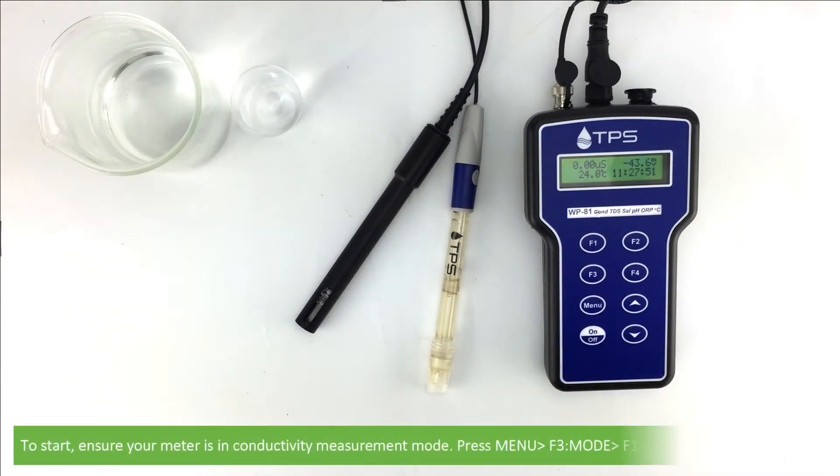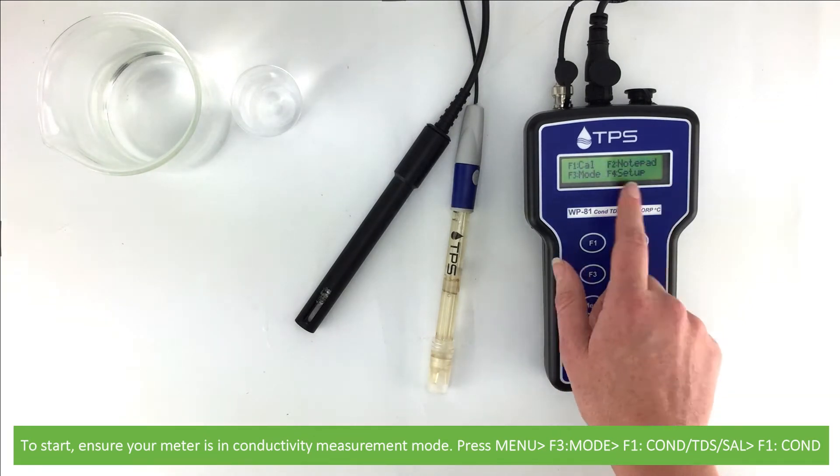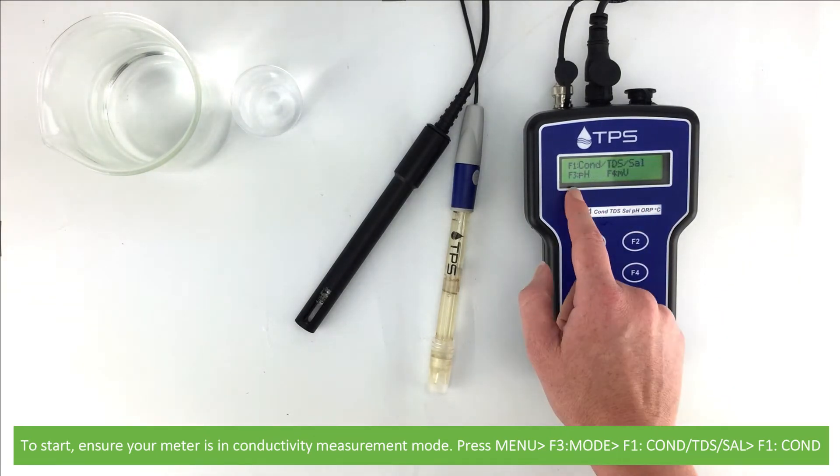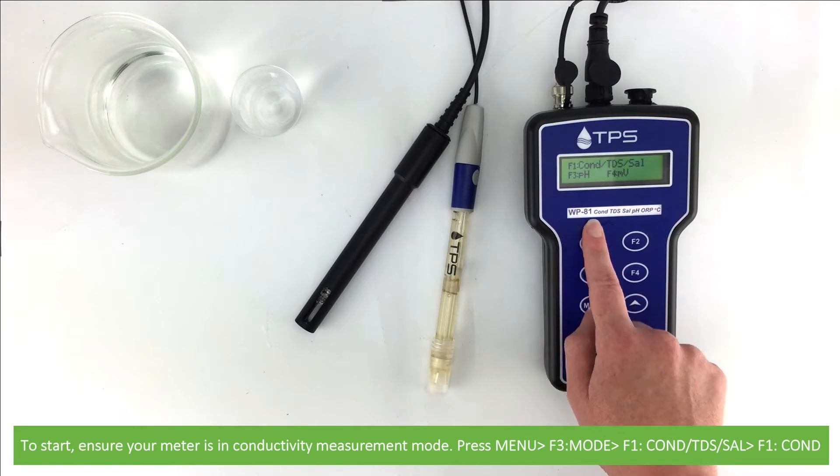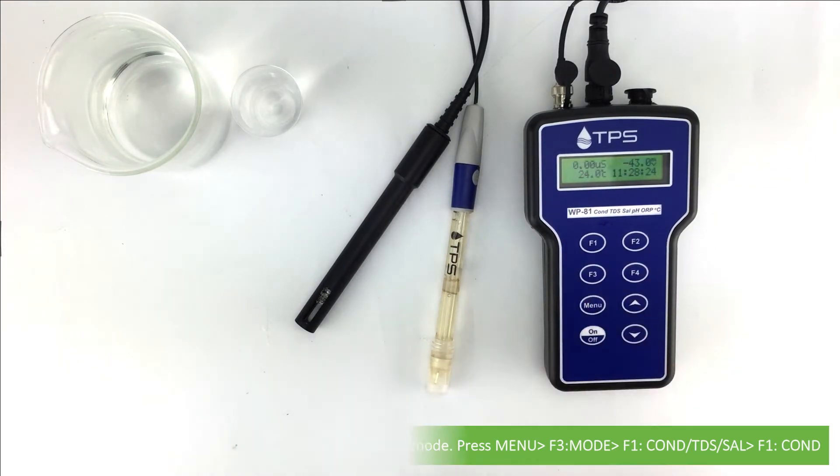To start, ensure your meter is in conductivity measurement mode. To do this, press menu, then F3 mode, F1 conductivity TDS salinity, then F1 C-O-N-D.